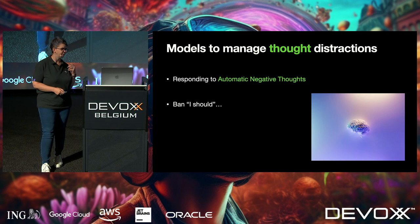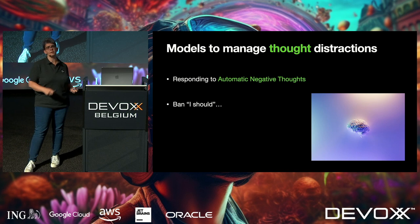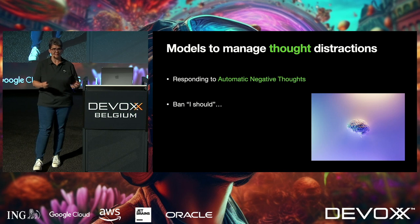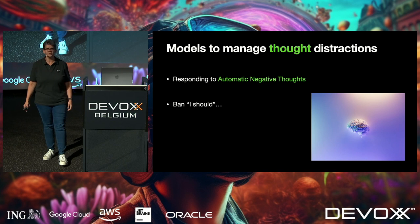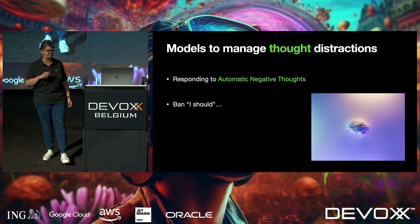For automatic negative thoughts: ban the phrase 'I should.' Look for credible evidence instead. 'I should be able to fix the build' — why? Are you the only person who's ever fixed the build? Do you have all the experience of exactly what's wrong? Do you have no colleagues to rely on? When you actually challenge your brain and look for credible evidence, you might realise you're being a little harsh on yourself. Maybe 'I should' isn't such a helpful phrase to keep in your vocabulary.